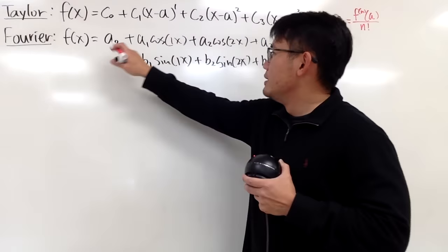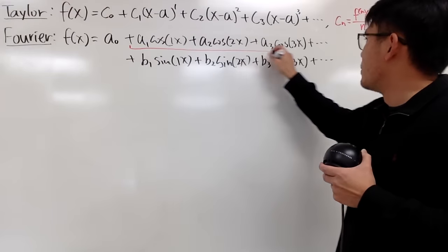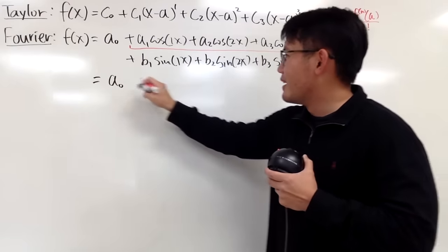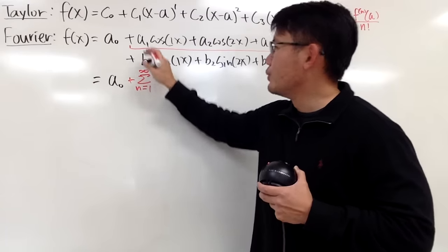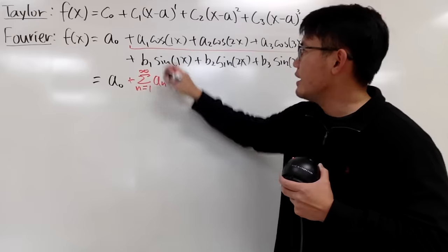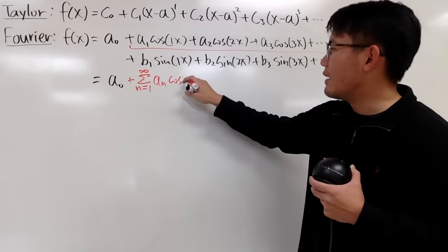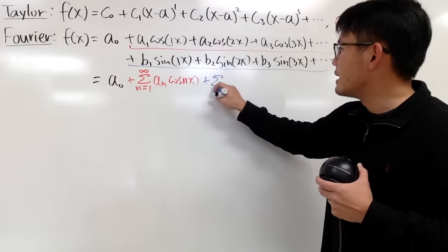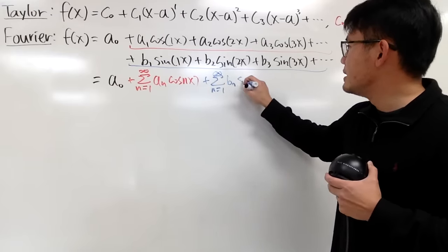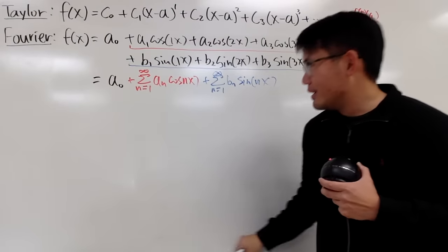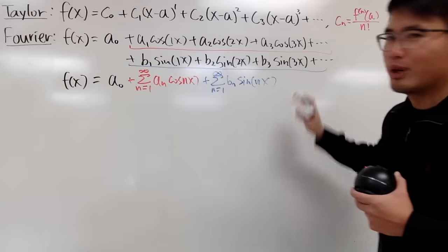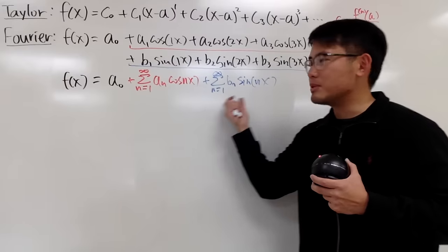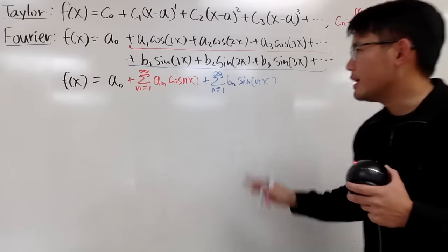This is a lot to write, so let's put it in summation form. We have a0, plus the sum as n goes from 1 to infinity of an·cos(nx), plus the sum as n goes from 1 to infinity of bn·sin(nx). It's a pretty scary-looking expression, but it's actually not that bad. And since the summations are pretty much the same, you can combine them into one summation if you like.